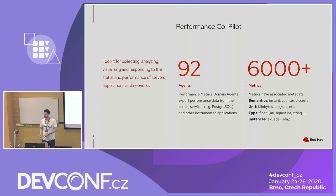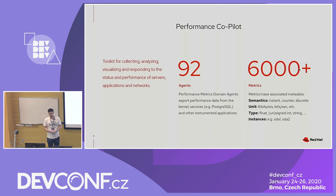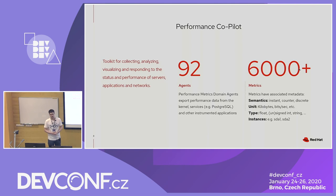Each metric in Performance Copilot has multiple metadata associated with it. For example, the semantics — it can be either an instant value, like a temperature of the hard disk, or a counter. The Linux kernel exports a lot of metrics as counters that are monotonically increasing unsigned integers. For example, if you write something to a hard disk, the Linux kernel aggregates this data, and if you want the rate of how many kilobytes per second were written to a disk, you get two values, calculate the difference, and divide it by the difference in time. Then you have the rate.